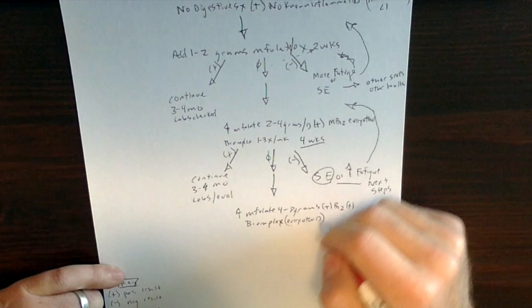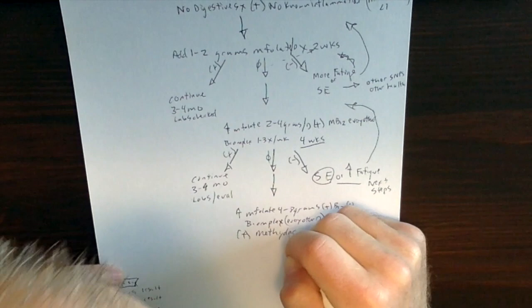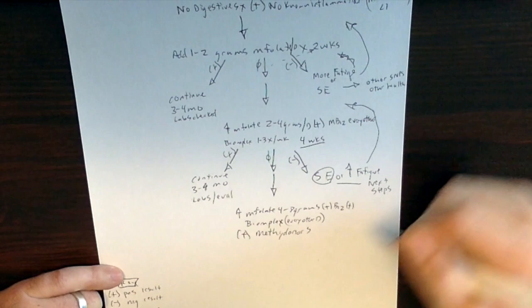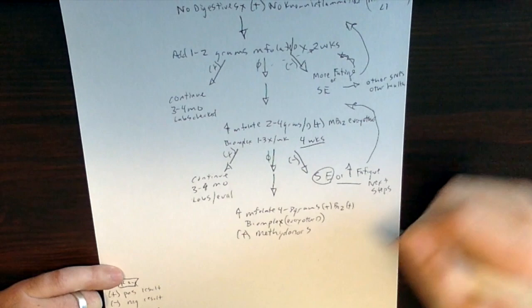And then you're also going to add methyl donors. So you may not want to do everything at once. It should be a gradual increase over the course of, you know, this one would be times eight weeks ramping up to that, but other methyl donors might be TMG or creatine.